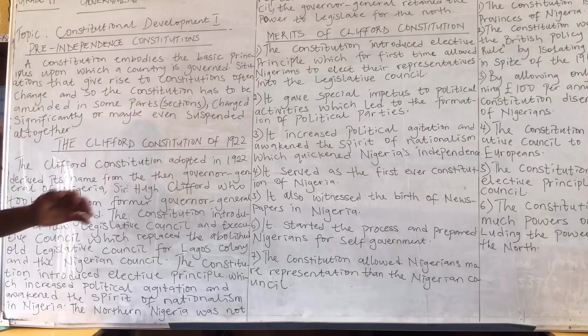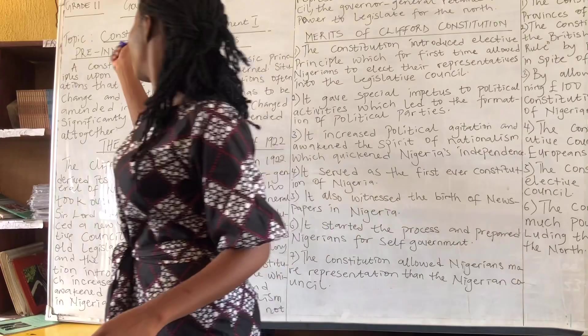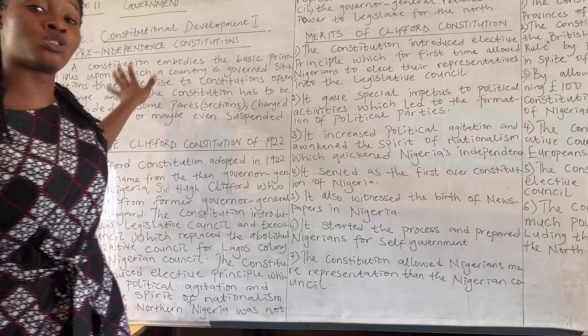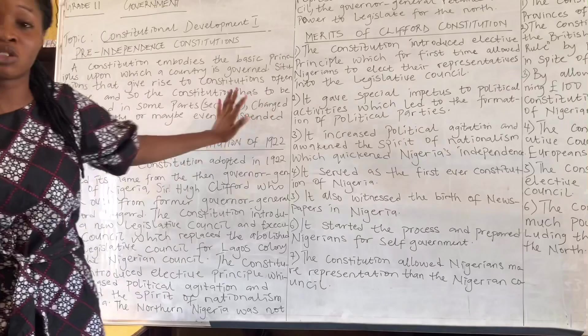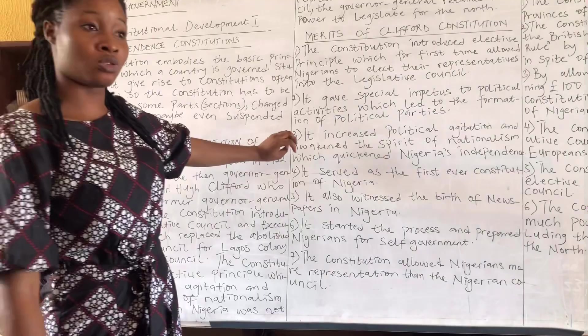Welcome to another class. Today we're covering Government, looking at constitutional development. We're going to start with pre-independence constitutions, which include the Lüderitz Constitution, MacPherson Constitution, Clifford Constitution, Richards Constitution, and others. Today we're focusing on the Clifford Constitution of 1922.